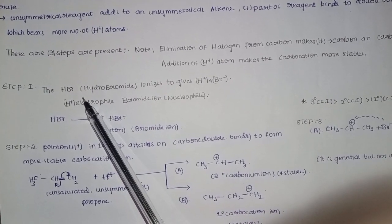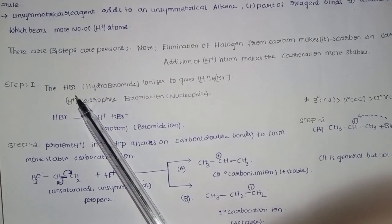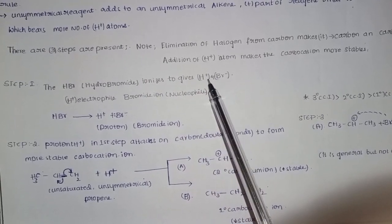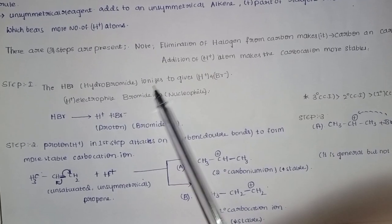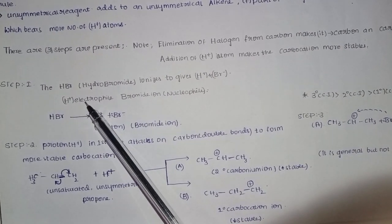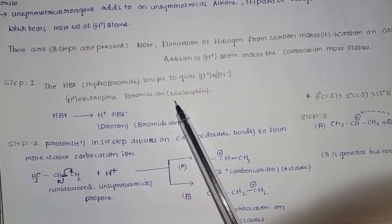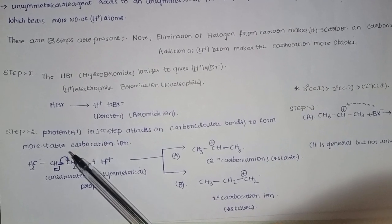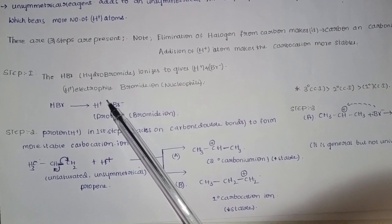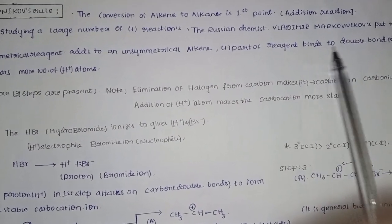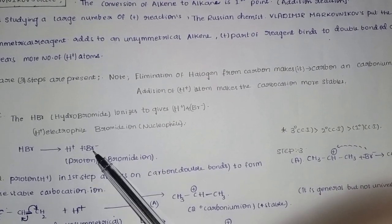Step 1: The reagent HBr (hydrobromide) ionizes to give H⁺ and Br⁻. It separates to give H⁺, which is the proton — the electrophile — and Br⁻, which is the bromide ion — the nucleophile.